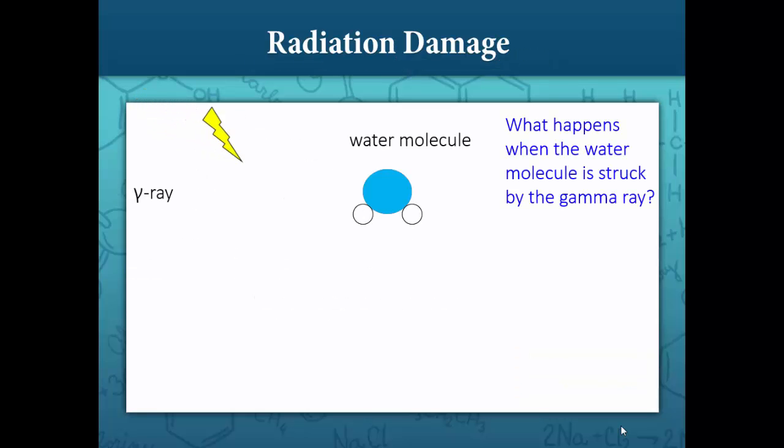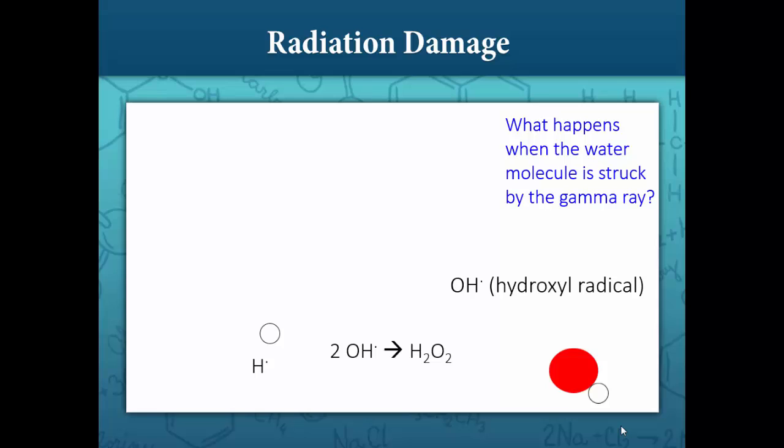In this visualization, when a water molecule is struck by a gamma ray, it produces free radicals. The gamma ray splits apart the water molecule, creating the ionized hydrogen ion and the ionized hydroxyl radical. Hydroxyl radicals combine with each other to form peroxides.